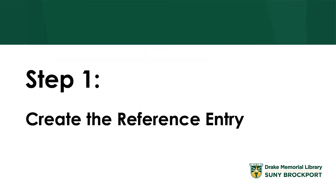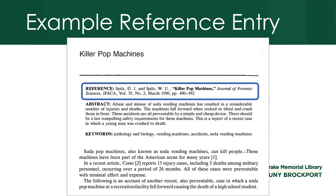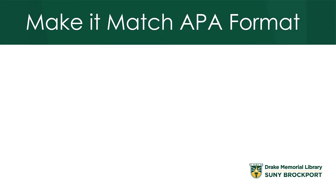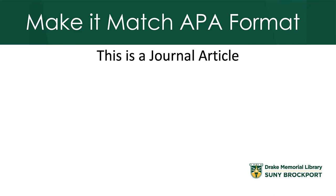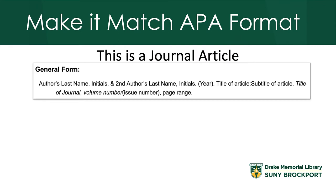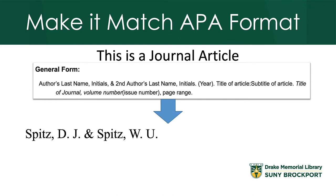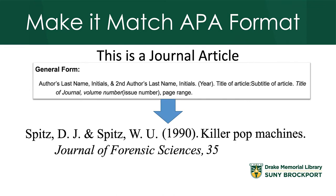There are four steps. First, create the reference entry. Here's a journal article that we'll be using for this example. I need to make it match APA format. I know it's a journal article and I know this is the form, so here is the format we would use for our APA reference of a journal article.